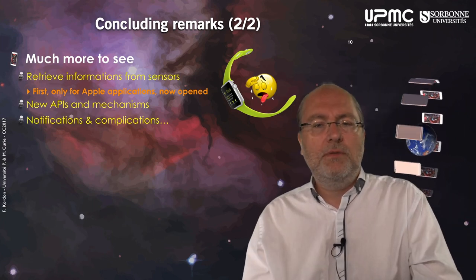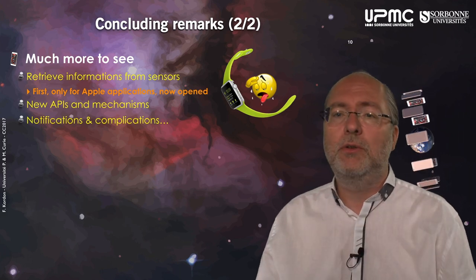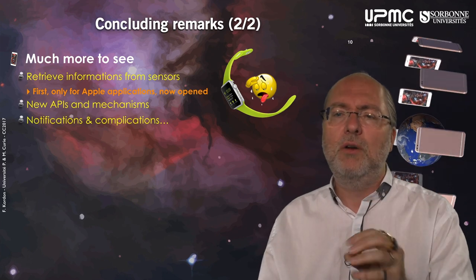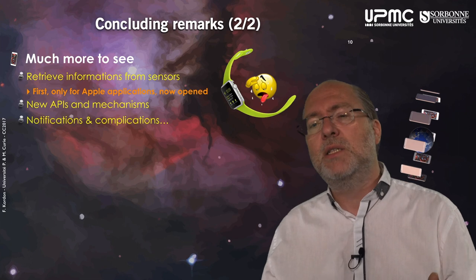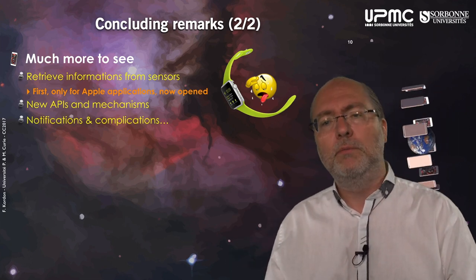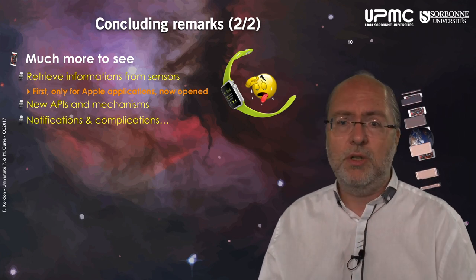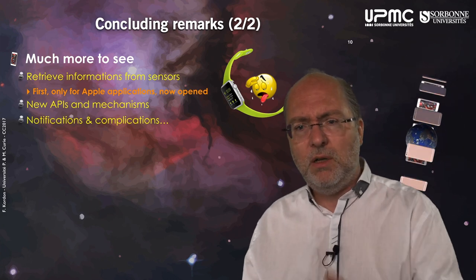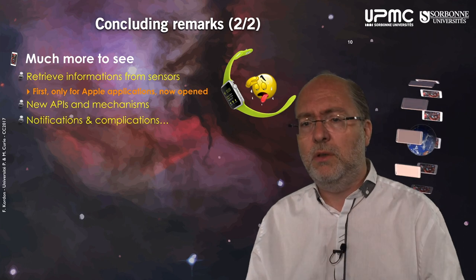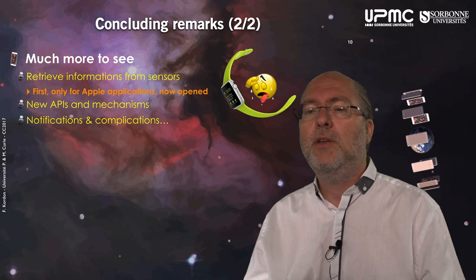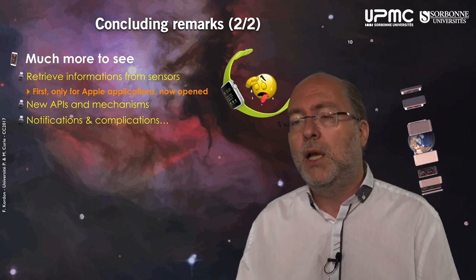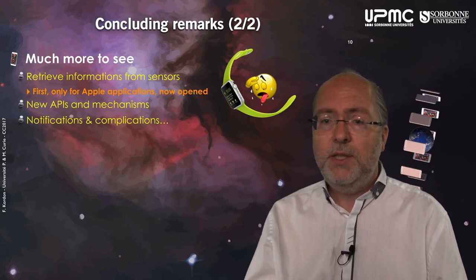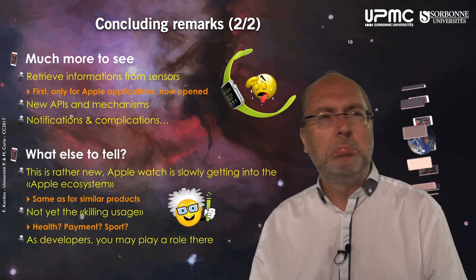There are much more things to see. You can retrieve information from sensors — this was originally only for Apple applications but is now open. New APIs and mechanisms are added with every major watchOS release. I didn't go through notifications, but it's not that complex — you have the WK notification interface to handle. There's also complication: it displays an icon that is computed regularly, and when you tap on it, it automatically launches your application. Complications were introduced around watchOS 3.